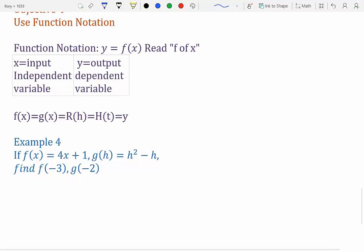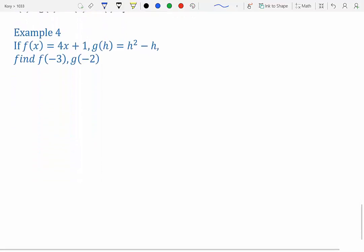So for example 4, we want to evaluate f(x) = 4x + 1. And g(h) = h² - h. So we want to do f(-3) and g(-2).